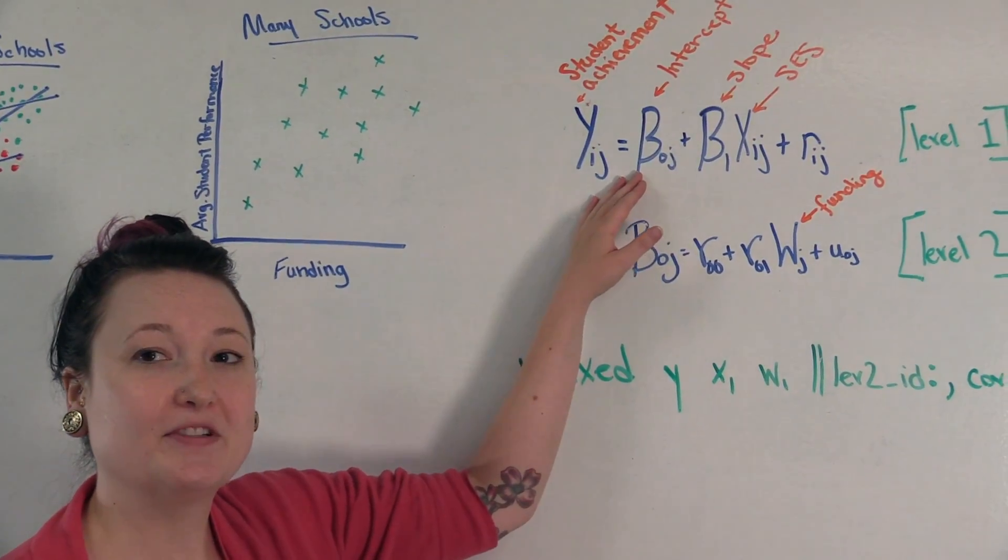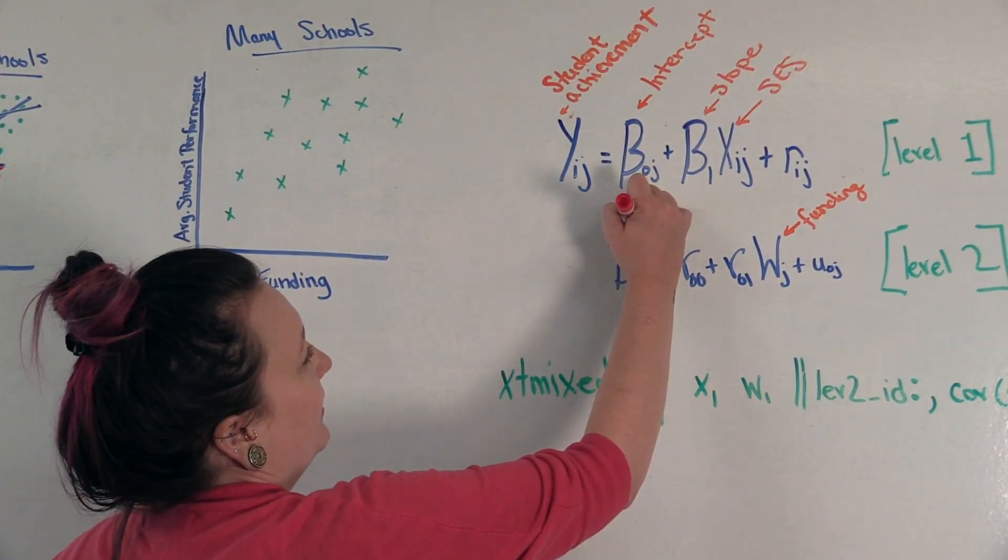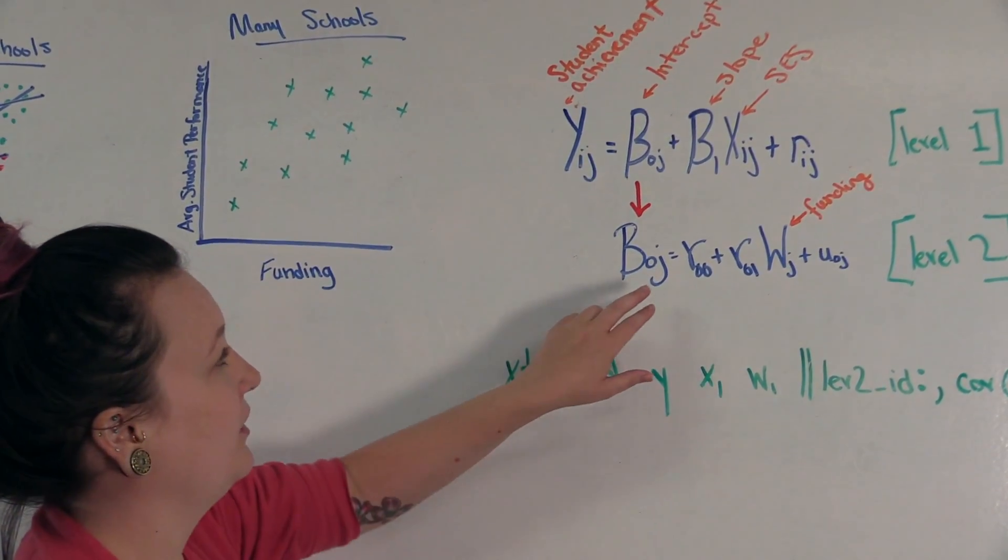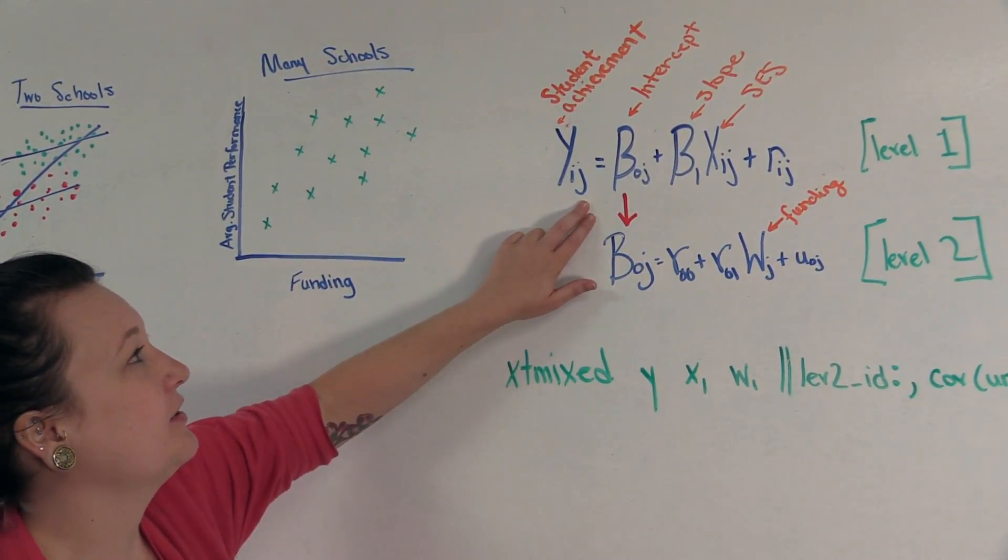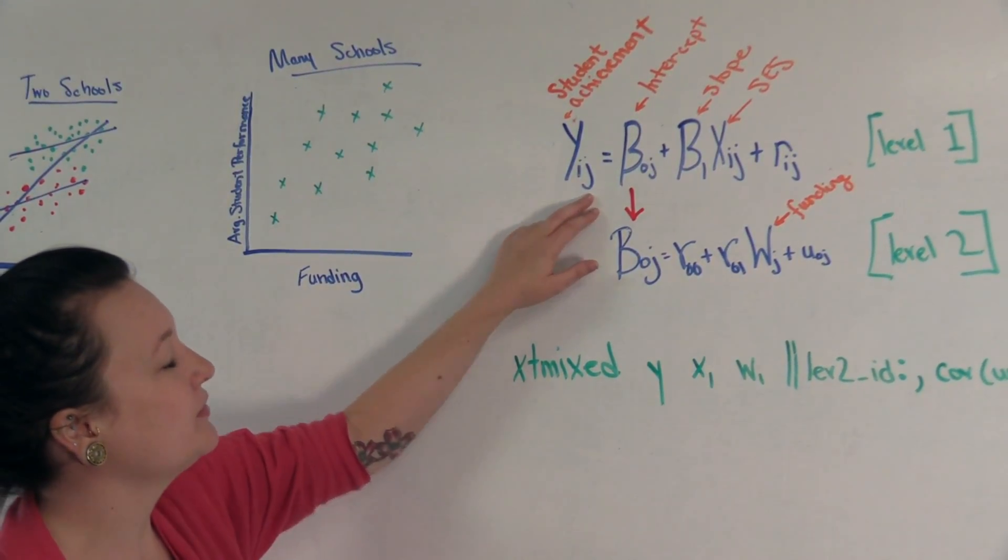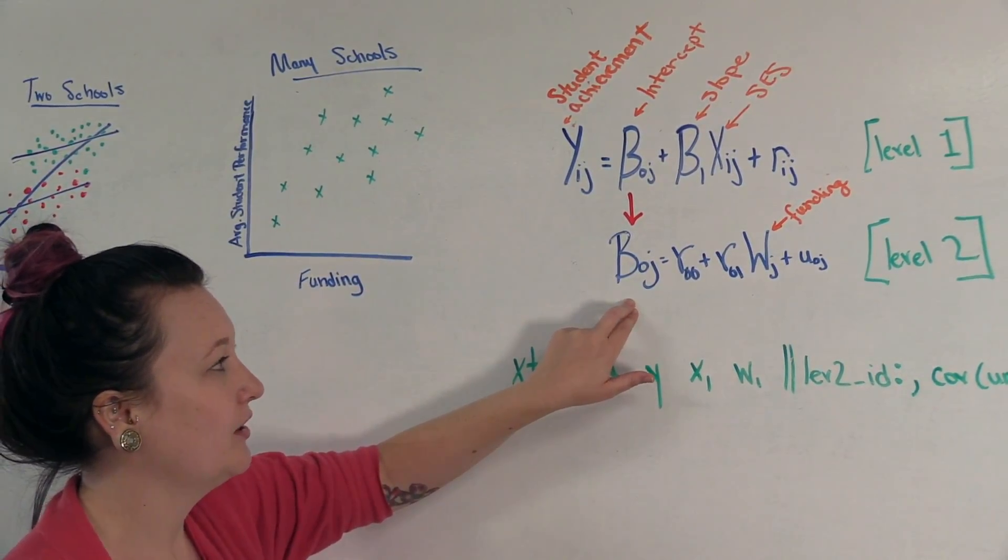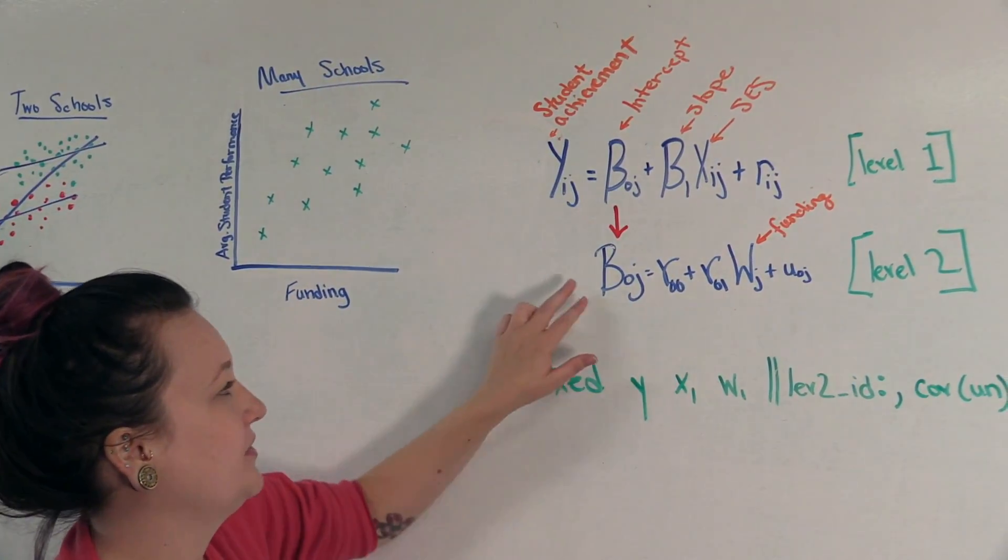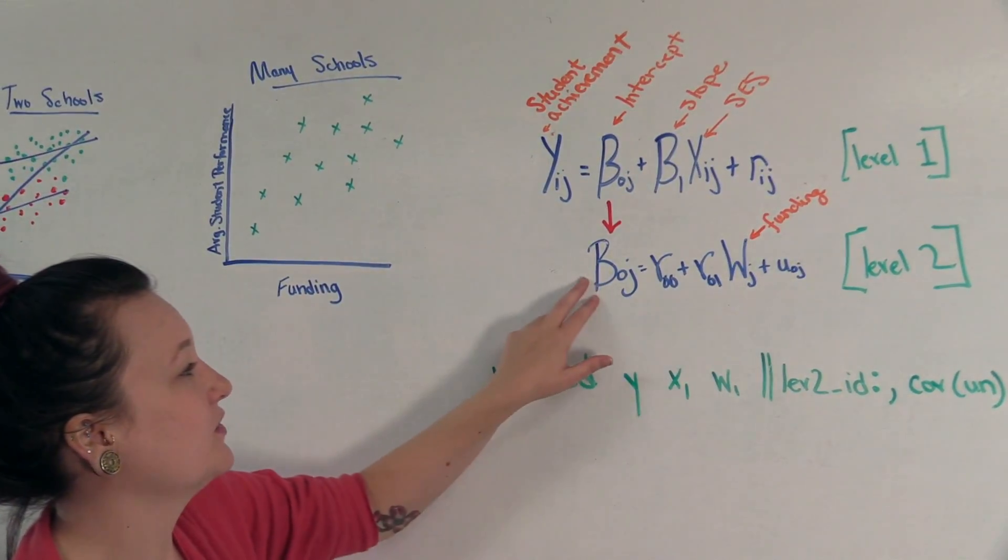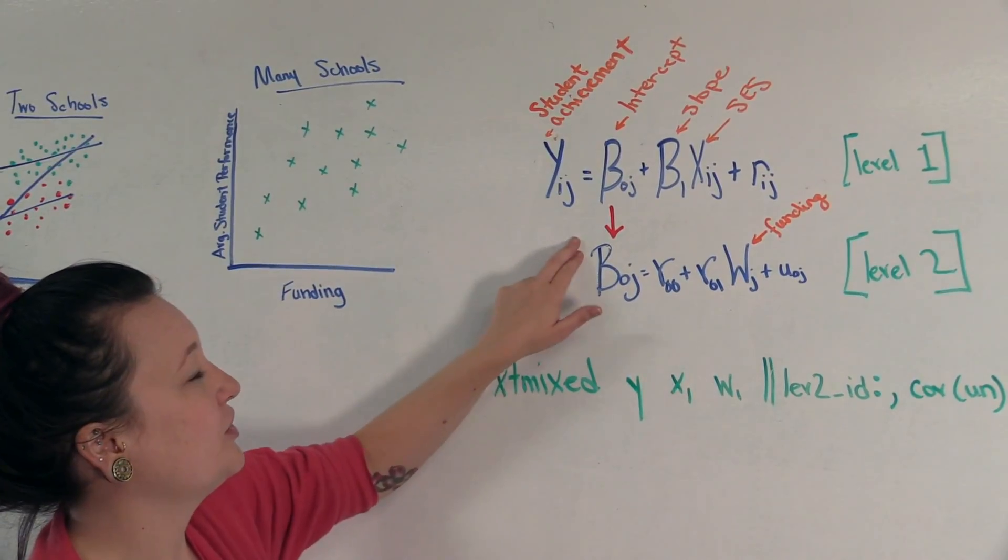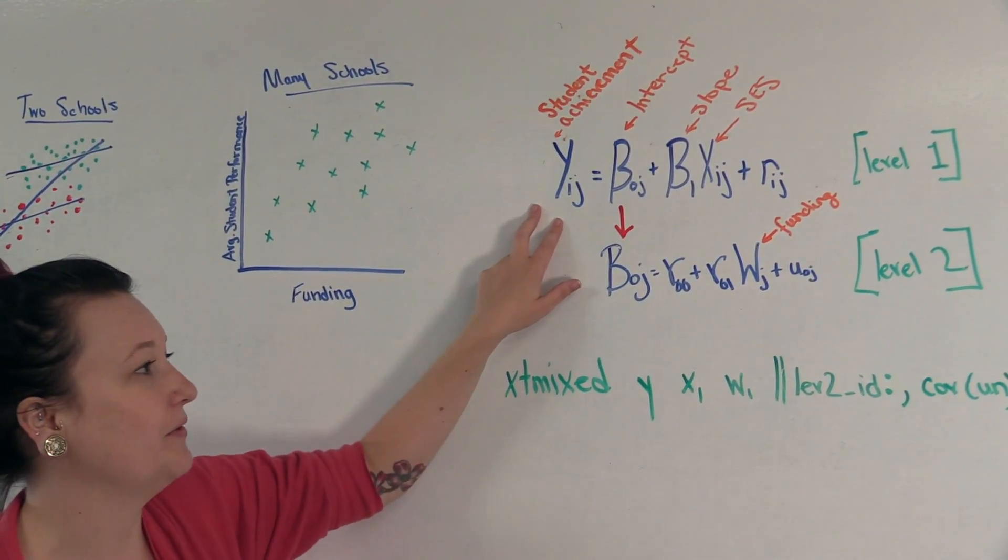Since the intercept is going to be different for each level two unit, it's going to be measured in a separate yet simultaneously estimated equation, which is represented here. So the intercept for each level two unit, in this case schools, is going to be measured in a separate yet simultaneous equation using your level two variable to predict the intercept. In this case, we're using school funding to predict the school specific intercept, which goes into the equation used to predict student achievement.